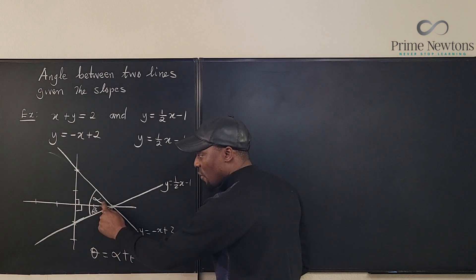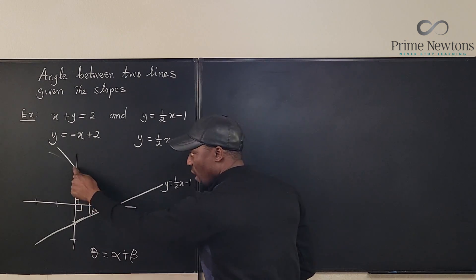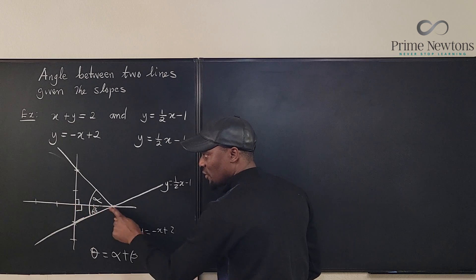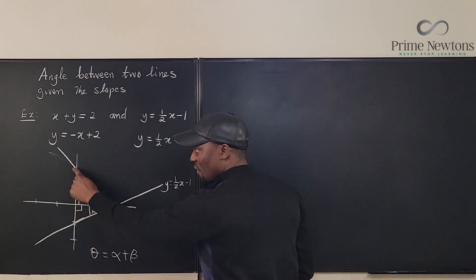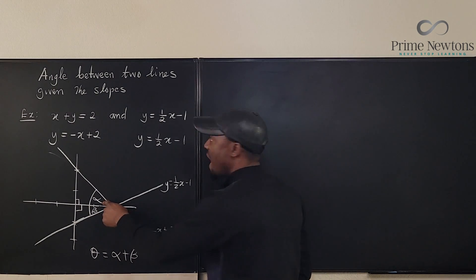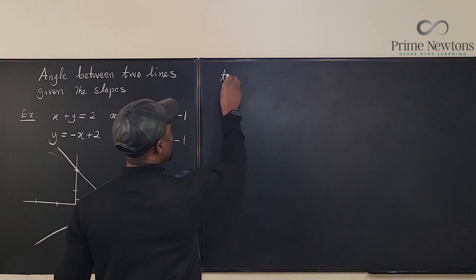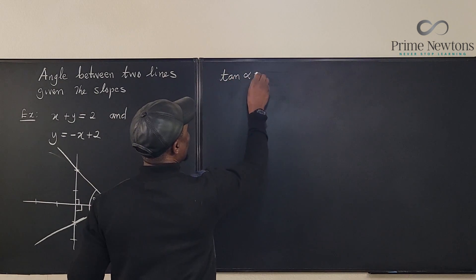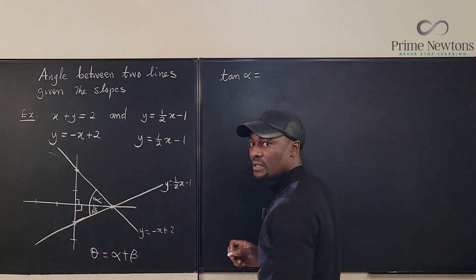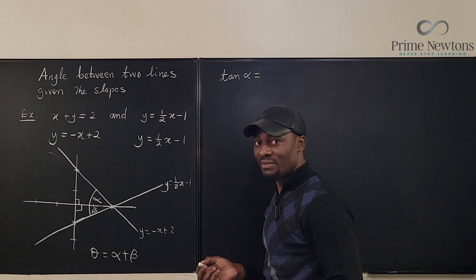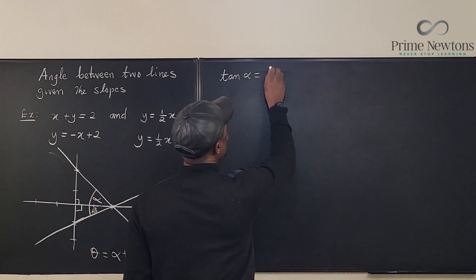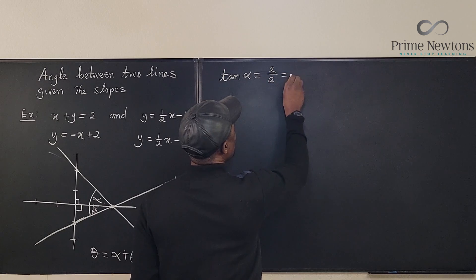We know this vertical distance is 2 units, and the horizontal distance is also 2 units. Since we know the opposite and adjacent sides, we can find the tangent. So tan(alpha) = opposite/adjacent = 2/2 = 1.